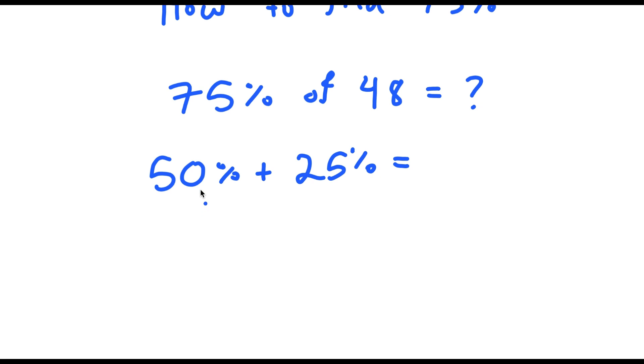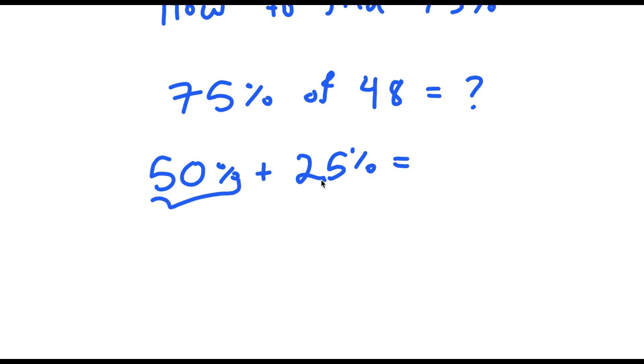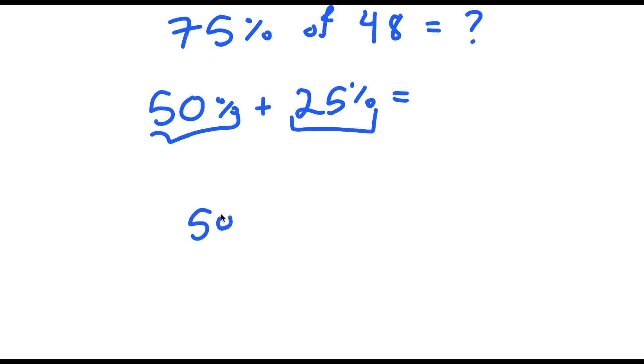So what I'm going to do is take 50% of 48 and then add it with 25% of 48. So what's 50% of 48? This is just half of 48. So half of 48 is 24. That's simple.